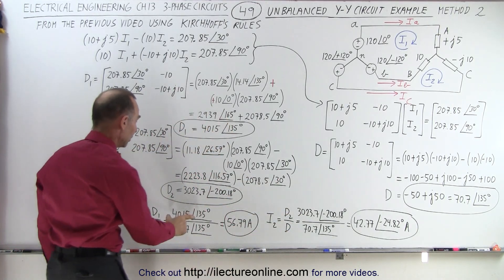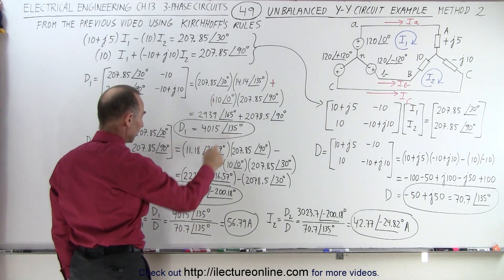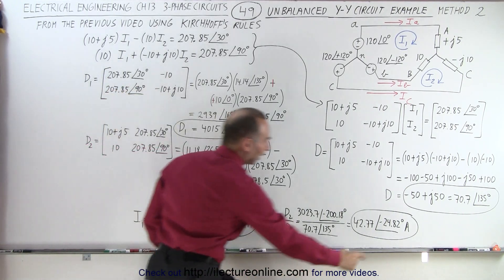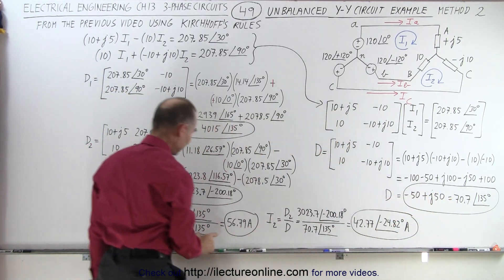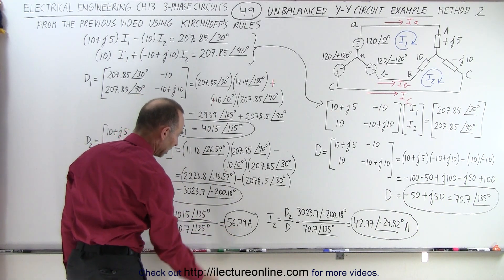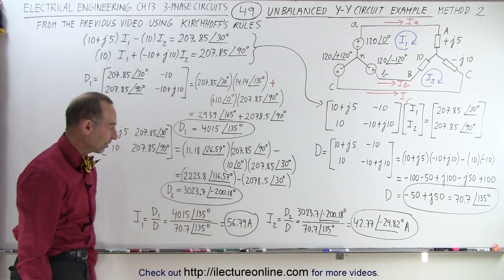When we simplify that, we take 4015 with a phase angle of 135 and divide it by 70.7 with a phase angle of 135. We get the current for I1 of 56.79.